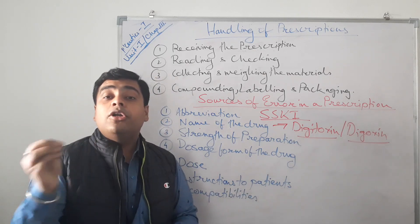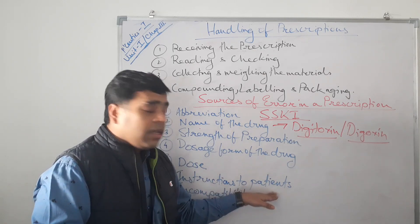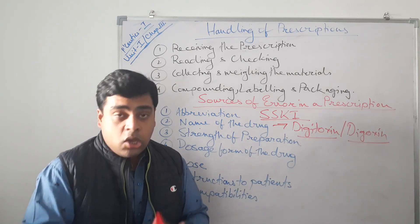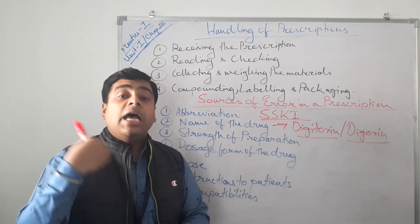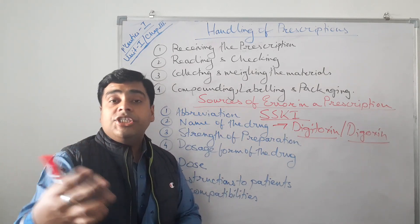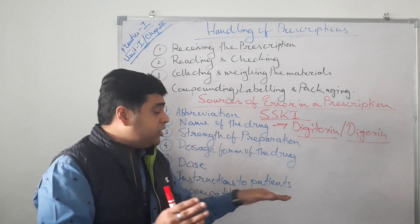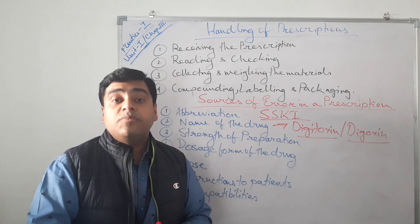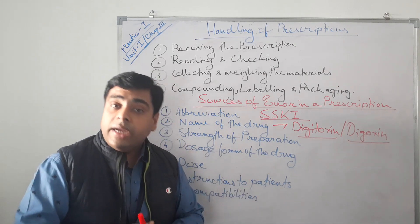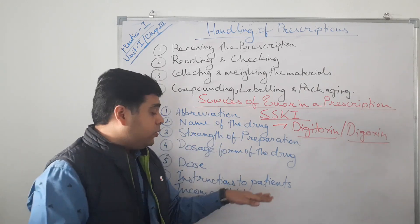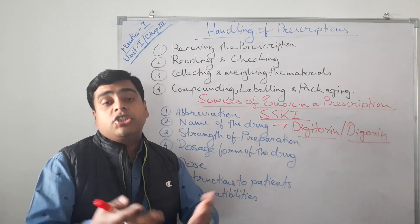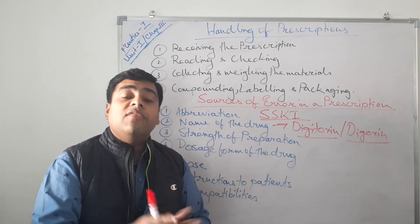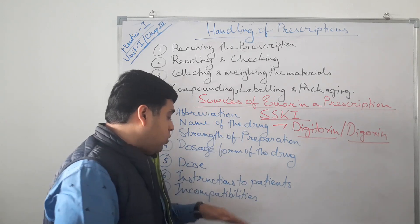Instructions on how to take the medication are also a source of error. If the patient follows faulty instructions, there can be serious consequences. Instructions such as whether to take the medication before or after lunch or dinner are very important. In such cases, the pharmacist should properly guide the patient about the instructions, and in most cases it should be referred back to the physician for consultation.